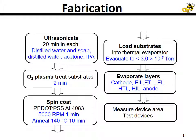The evaporation process is then sequentially done to evaporate each of the layers. And finally, when the devices are unloaded, they're unloaded directly into a nitrogen-filled glove box. This nitrogen atmosphere protects the OLEDs from oxygen and water, which would have a deleterious effect on their performance.